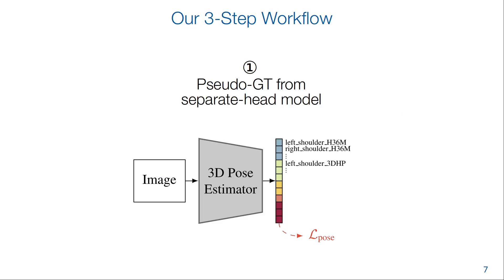Our workflow has three steps. We first train a pose estimator with separate output heads and use it to create pseudo ground truth. This will function as a Rosetta Stone parallel corpus for figuring out how the skeletons relate.